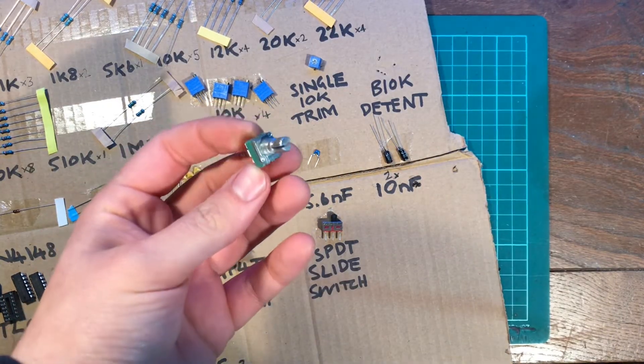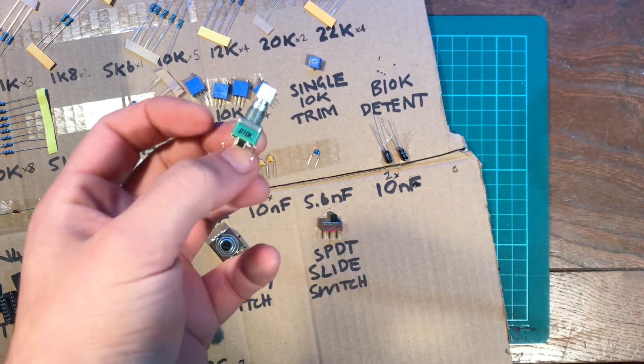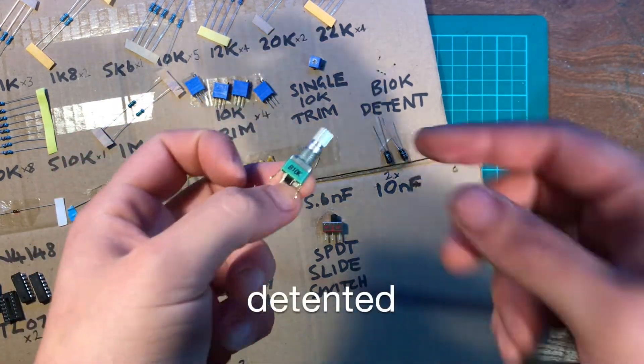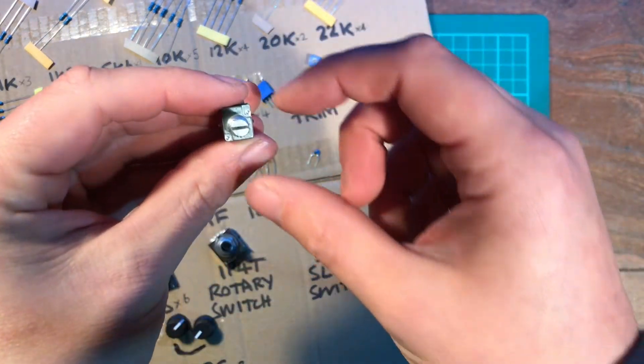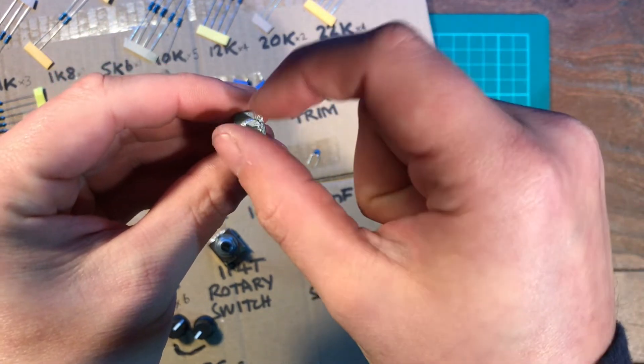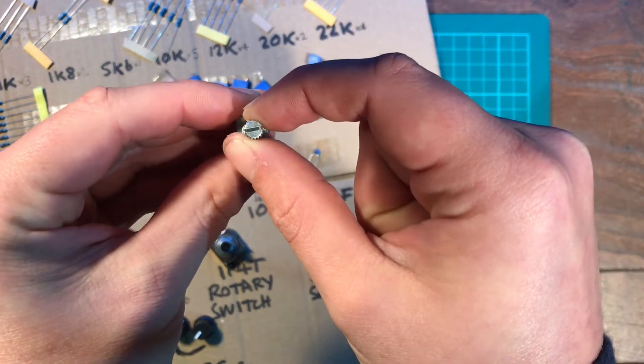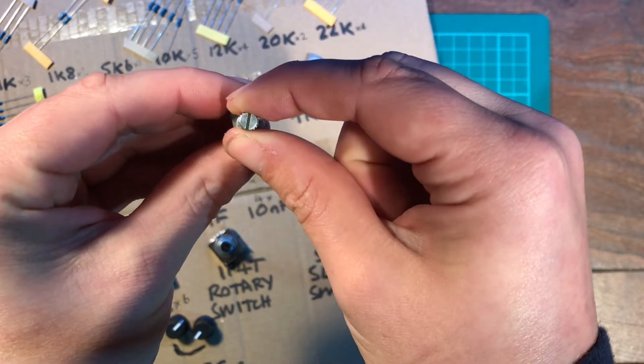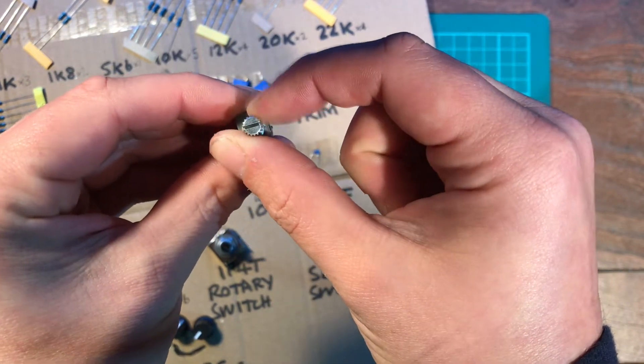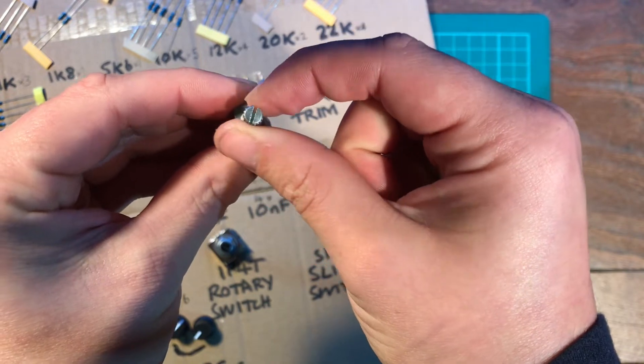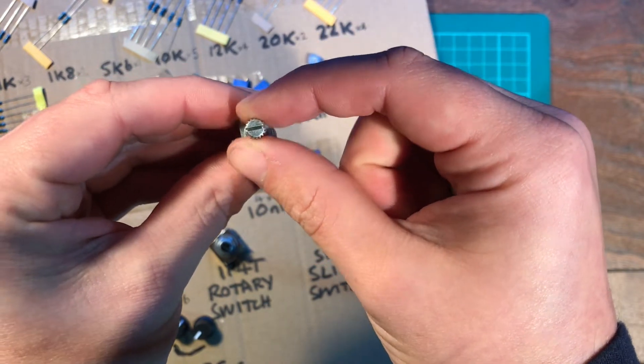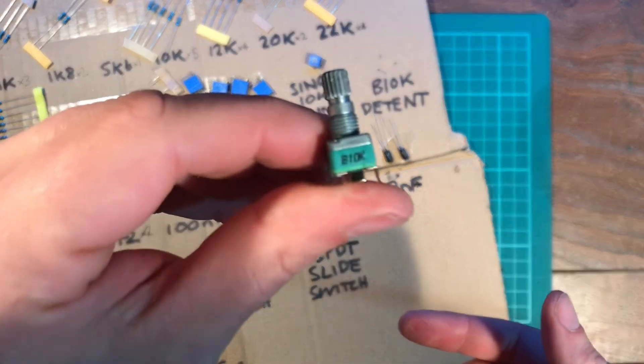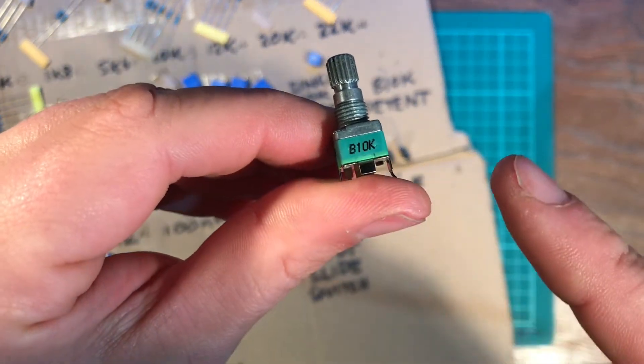This little potentiometer is quite a cool one because it's actually detented, which means that the center position has a little groove so you can feel when it's locked in there. It's handy because if you turn it all the way to the left that's an octave down, all the way to the right that's an octave up, then you can just return to the middle position and you know it's in tune. It's a linear one, B10K.